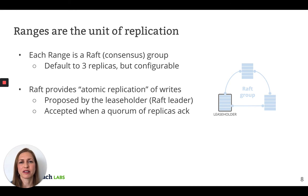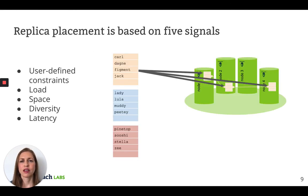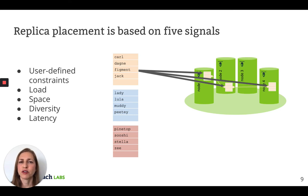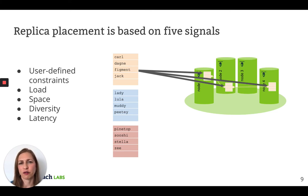The command is accepted when a quorum of replicas acknowledge and write it to disk. Now that I've told you how we store and replicate data, how do we actually distribute data across the cluster? There are five signals that CockroachDB uses to determine replica placement. The first signal is the most important and will overwrite all the others. User-defined constraints basically allow a DBA or an application developer to specify on a per-row basis where data is allowed to reside. For example, you can ensure compliance with GDPR by specifying that the data for European customers must not leave EU data centers. You can also get performance benefits by specifying that data should reside close to the users that are accessing it most frequently. I don't have time to go into detail about the other four signals, but you can imagine that we try to balance load and space utilization across the cluster.